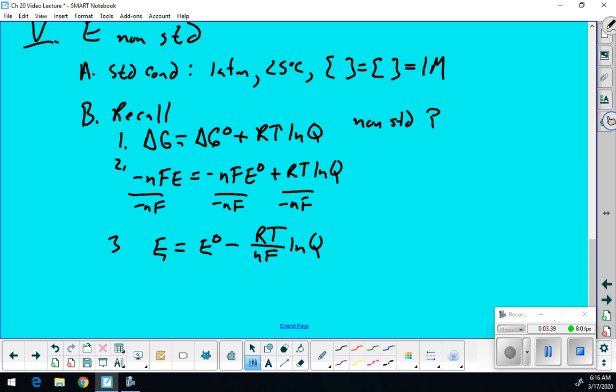And that indeed is a correction. This is our correction for non-standard pressure and non-standard concentrations. Now, you can use this, watch your units, make sure your units cancel. So if we are in joules per volt, then you need to make sure you're using 8.314 joules per mole Kelvin there.